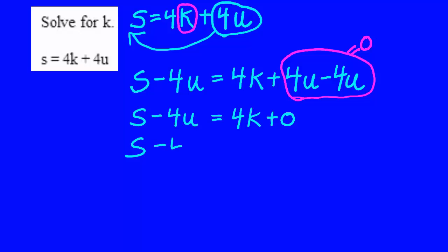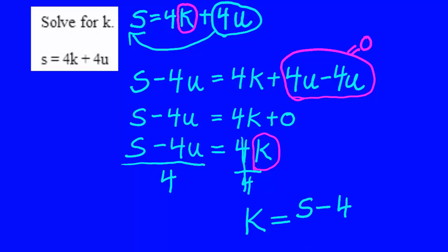So, s minus 4u is going to equal 4k. Remember, s and u are acting like numbers. k is acting like x. So, now I'm going to divide both sides of the equation to get k all by itself, just like I would x. I divide by 4 and I divide by 4. 4 over 4 is 1. So, on the right I'll have 1 times k, which is k. And that's going to equal s minus 4u over 4.